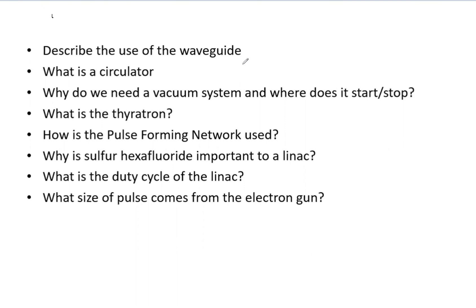So now circulator. In the waveguide, this circulator acts as a one-way sign essentially, where microwave power goes from the klystron to the accelerator tube but can't be reflected back to the klystron where it would cause some major damage.